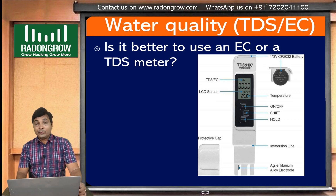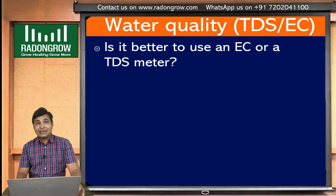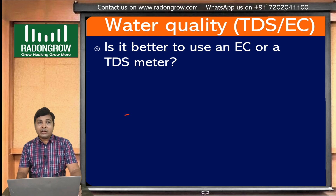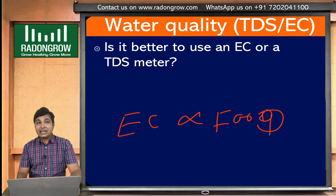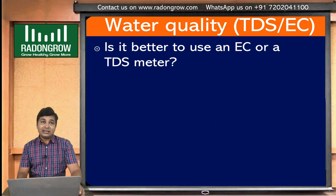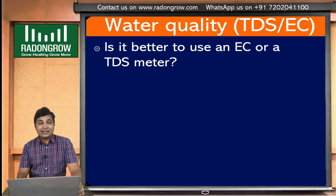I hope you understand what EC and PPM are. Simply put, more EC means more food available for the plant. Low EC means low food available for the plant in the nutrient solution. To increase TDS, add more nutrient. To decrease TDS, add more pure water or dilute your nutrient solution. In the next episode, we will discuss about pH. Thanks again — Rajinikan Sadani from RadonGro.